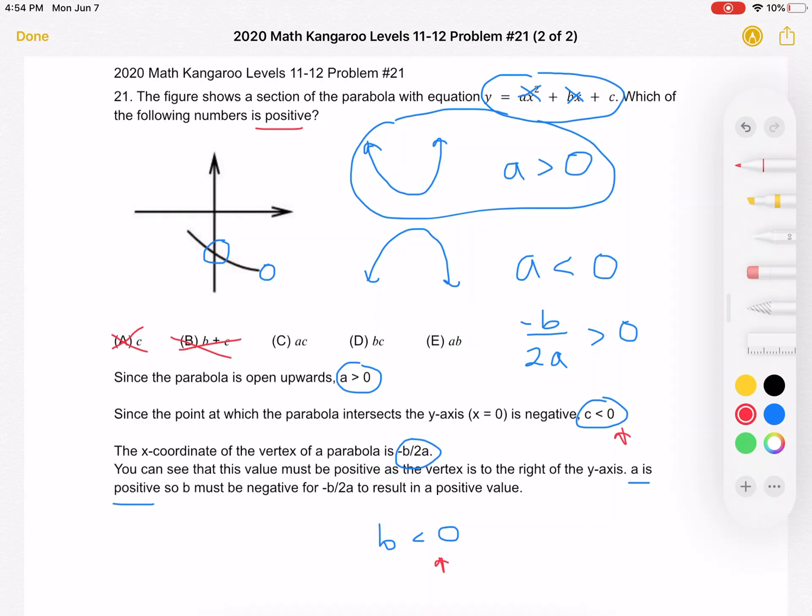For choice c, we have a times c. We have a positive number times a negative number gives us a negative product. For choice d, we have b times c. Now we're multiplying two negative numbers. So yes, we should end up with a positive number. I'm going to circle that, but let's just look at e to make sure.